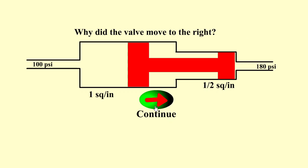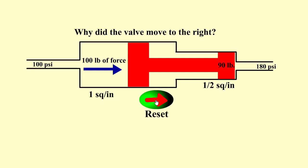If we test it we'll see that the valve moves to the right. Why did it move to the right? We apply pressure multiplied by surface area. On the left hand side: 100 pounds per square inch times one square inch gives 100 pounds of force. On the right hand side: 180 psi times 0.5 square inch is only 90 pounds. So the valve moved to the right because the force on the left hand side was greater.